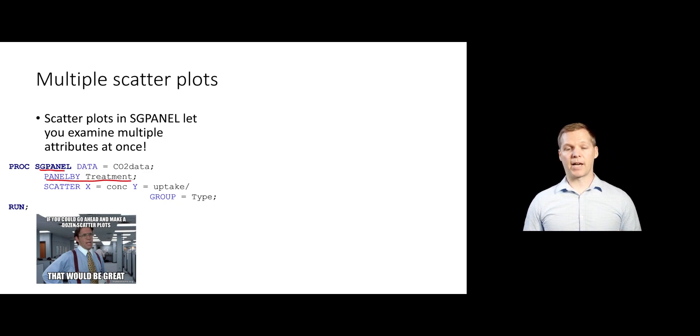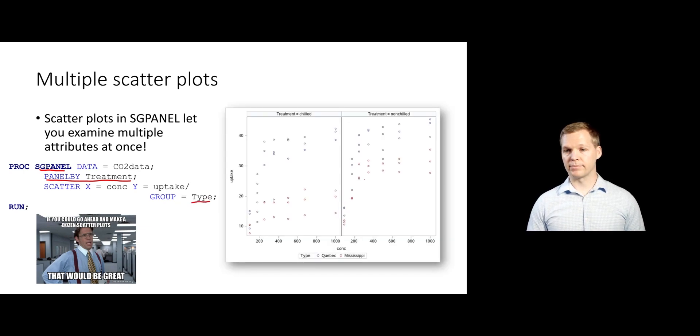Other than that, I've kept that same scatter statement, although we are now grouping by type. And so here we can see that there is a big difference in the chilled group between the Quebec and Mississippi types.